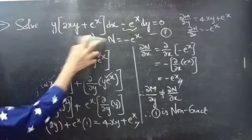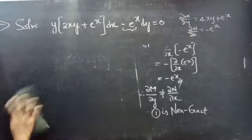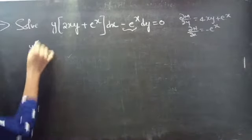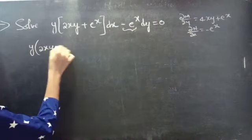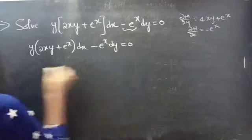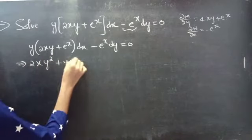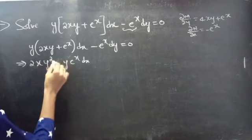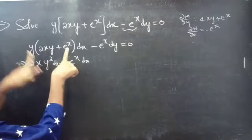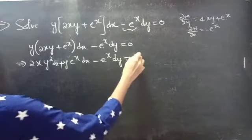Now let's reduce the given equation to an exact equation — that is, non-exact to exact. We have y(2xy + eˣ)dx − eˣ dy = 0, which can be written as 2xy² dx + yeˣ dx − eˣ dy = 0.